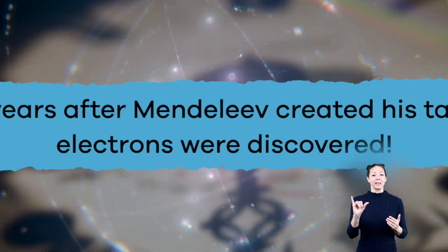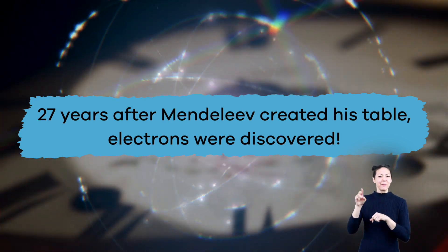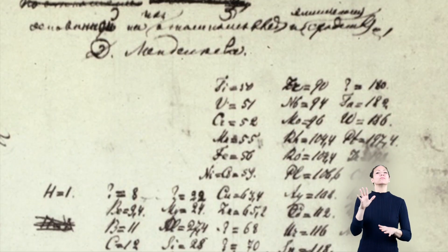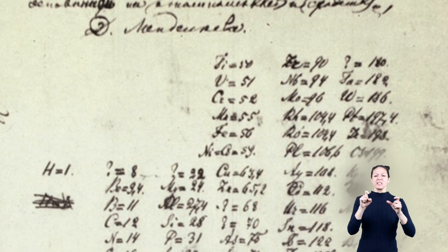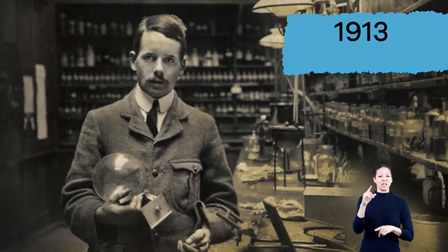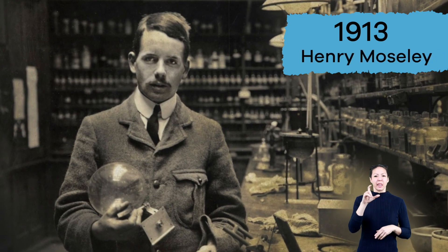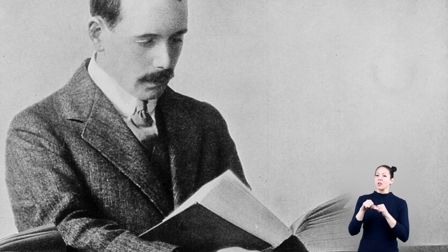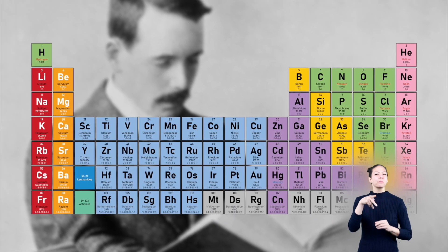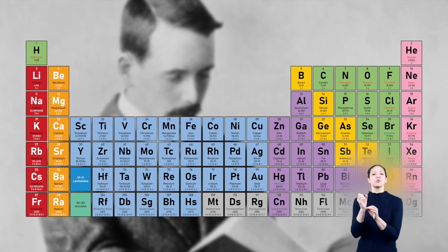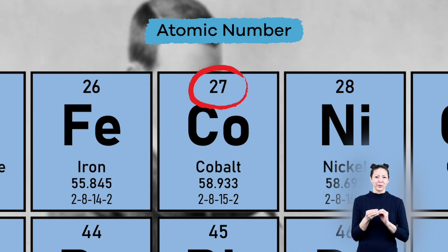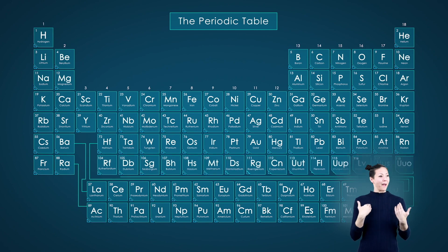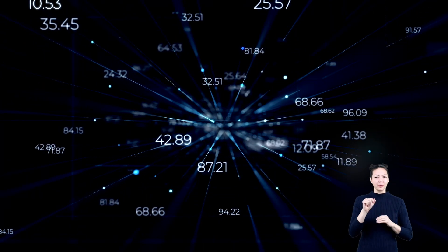27 years after Mendeleev created his table, electrons were discovered, which meant that his table needed to be revised. In 1913, a chemist named Henry Mosley discovered that elements are different from each other because their atoms have different numbers of protons, which led to the creation of the atomic number and the version of the periodic table of elements that we have today.